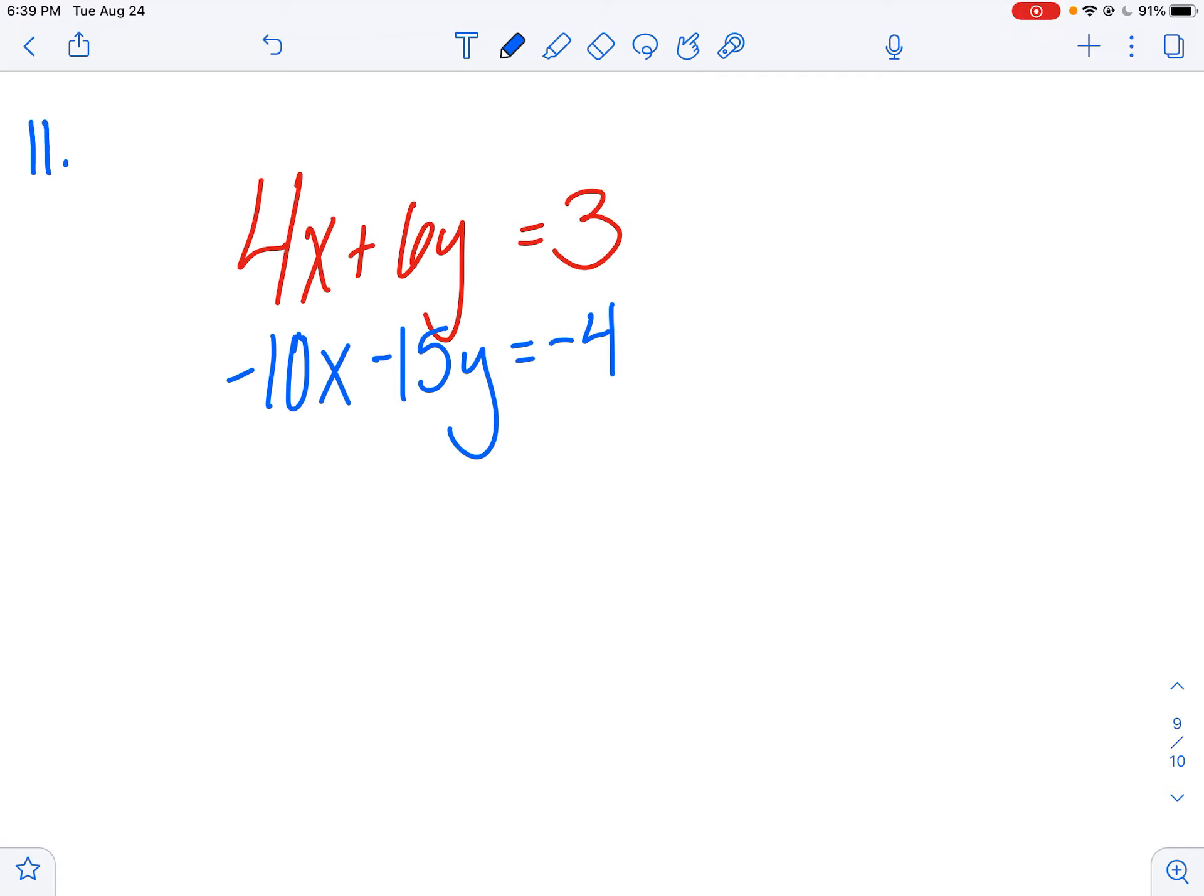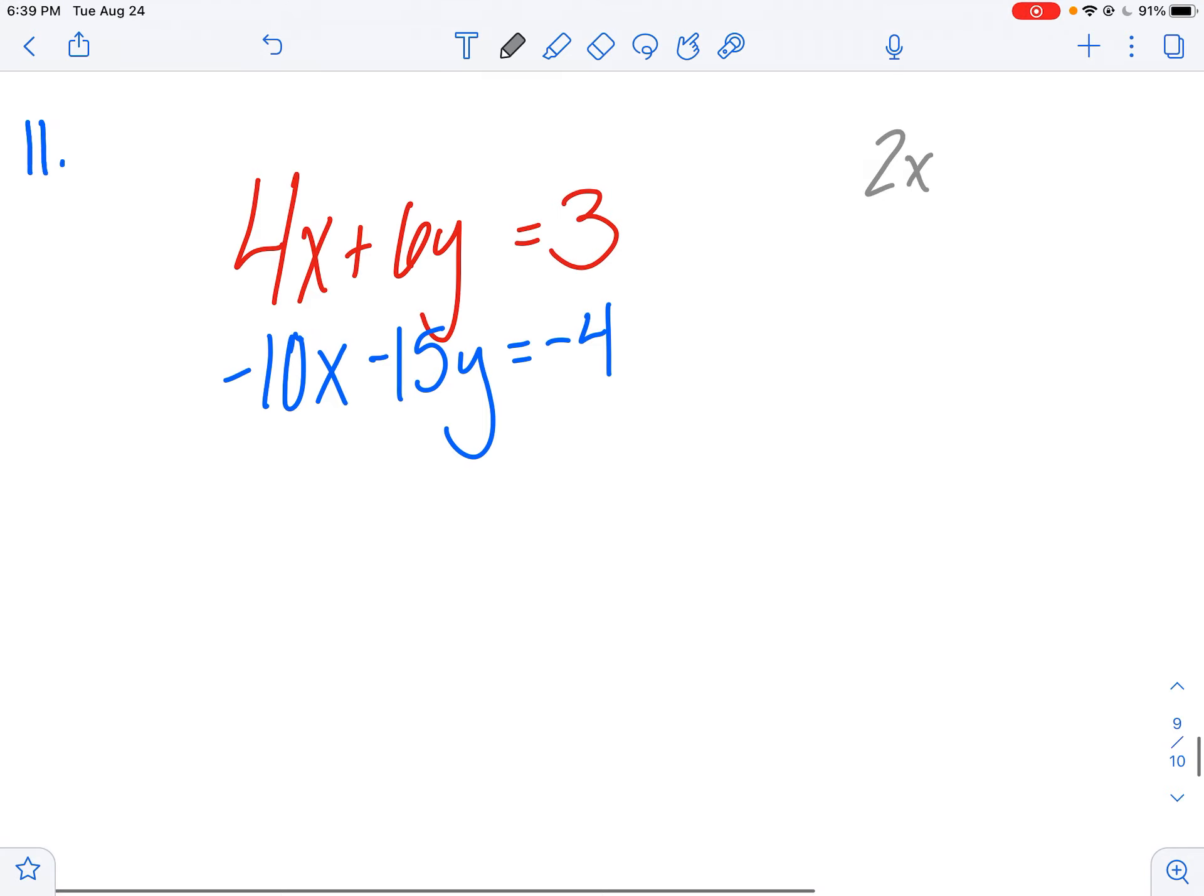The way that I know it's elimination and not substitution is because none of the variables are isolated. So if I had something like 2x minus 4y equals 11, and y equals 3x plus 2, well then I have a variable isolated, so I would know exactly what to plug in or substitute for y.